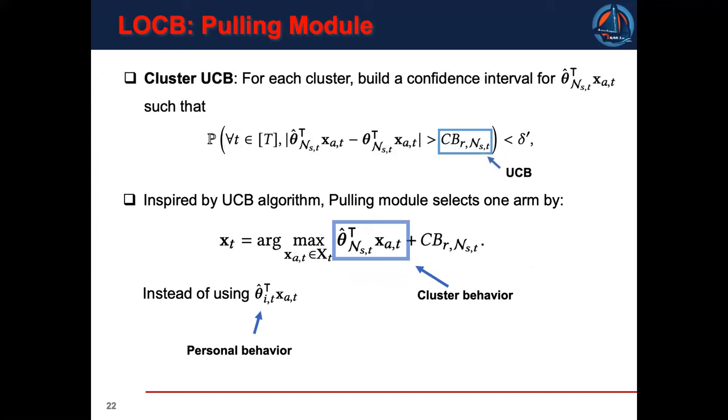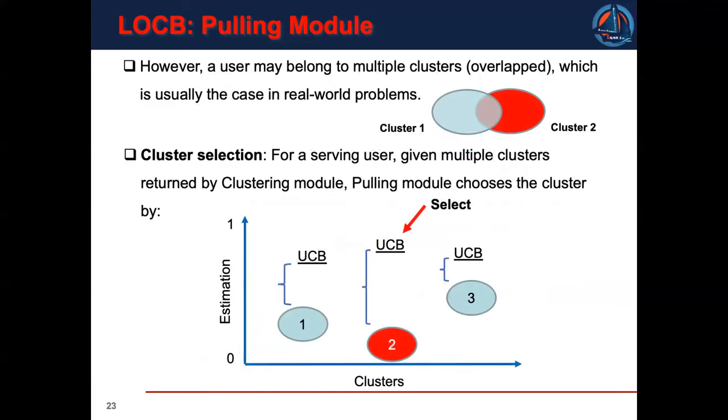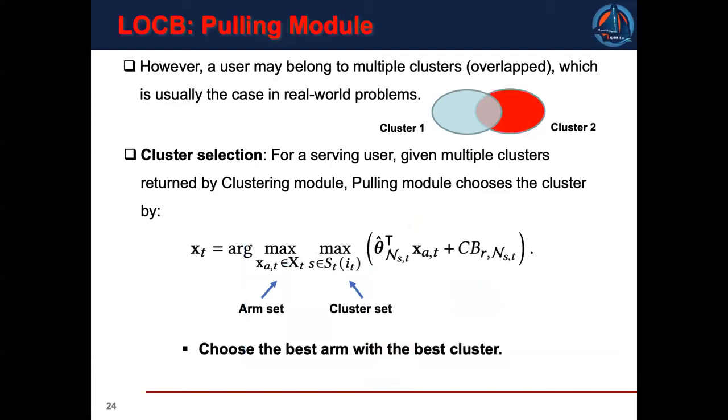Inspired by UCB algorithm, the pulling module selects the arm based on the cluster behavior instead of the user behavior in order to leverage the user dependency. However, as mentioned before, the clustering module can return overlapped clusters, so a user may belong to multiple clusters. This situation also usually happens in real-world applications. Therefore, we need to select the best cluster among candidate clusters. In this paper, we choose the cluster using the UCB-based strategy. We choose the cluster with the largest sum of its expected reward and its upper confidence bound. Formally, the pulling module determines an arm by this equation, which is to choose the best arm with the best cluster for the serving user.